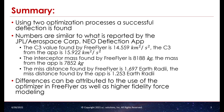The C3 value reported by FreeFlyer was 14.559 km² per second squared, and the C3 value from the app was 15.922 km² per second squared. Additionally, the interceptor mass, which is a function of C3, came out as 8,188 kg from FreeFlyer and 7,852 kg from the app, which is due to the app's higher C3 value. Some of these differences can be attributed to the different approaches used to model the situation — for instance, the interpolation method used to find spacecraft mass values based on C3 in FreeFlyer is likely different from the way spacecraft mass values are calculated in the near-Earth object deflection app.